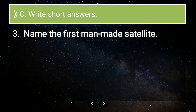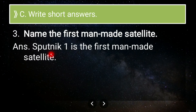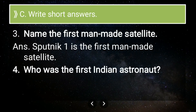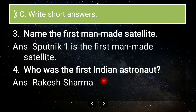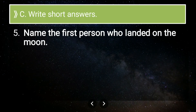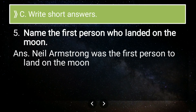Third question: name the first man-made satellite. The answer is Sputnik 1. Fourth question: who was the first Indian astronaut? The answer is Rakesh Sharma. Fifth question: name the first person who landed on the Moon. The answer is Neil Armstrong — he was the first person to land on the Moon.